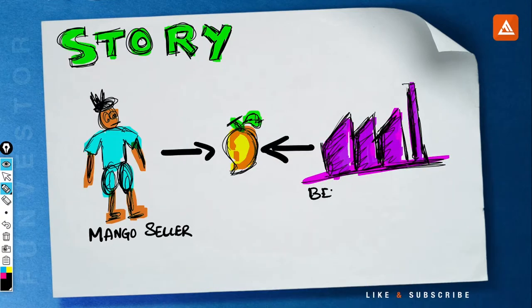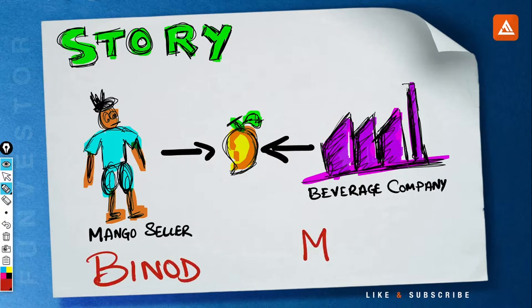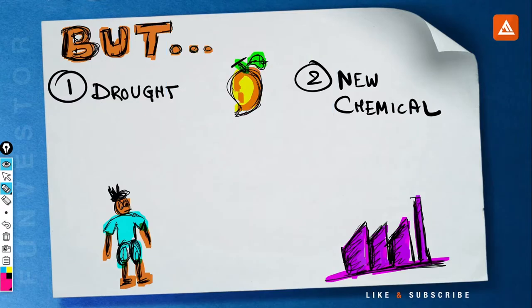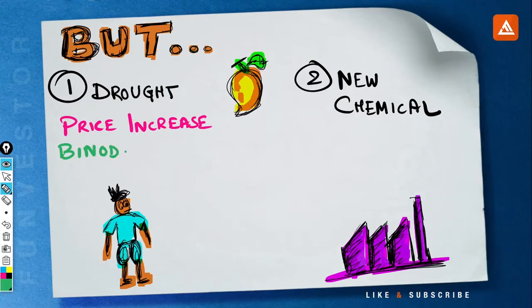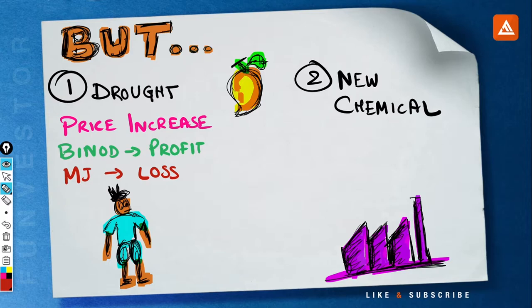The story talks about Binod, a salesman who sells mangoes to a beverage company MJ Limited. But there's a problem. There is a possibility of drought which could decrease the supply of mangoes, hence increase the price, which eventually will lead to huge profit for Binod but huge loss for the company.